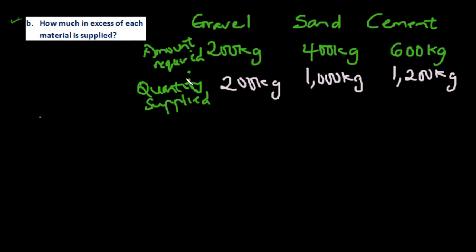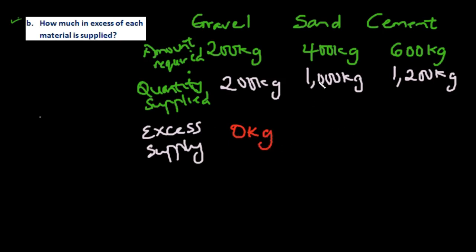We take the quantity required away from the quantity supplied to find the excess supply. For gravel: 200 minus 200 = zero kilograms — no excess. For sand: 1000 minus 400 = 600 kilograms excess. For cement: 1200 minus 600 = 600 kilograms excess.